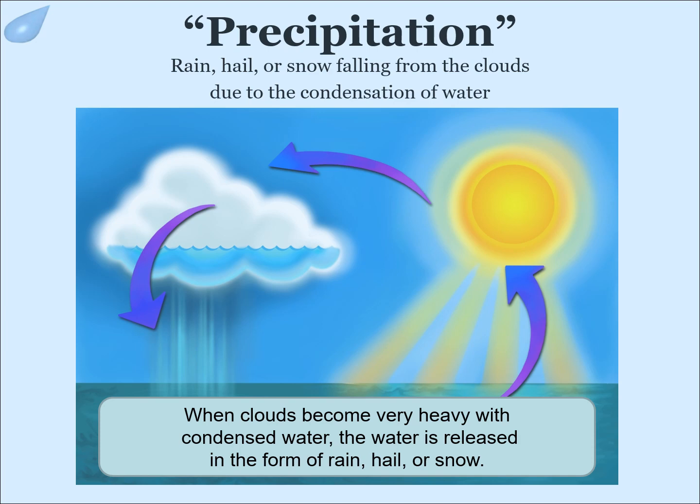Precipitation is a major component of weather and of the water cycle. Precipitation is responsible for depositing most of the fresh water on the planet — the rain, hail, or snow falling from the clouds due to the condensation of water. When clouds become very heavy with condensed water, the water is released in the form of rain, hail, or snow.